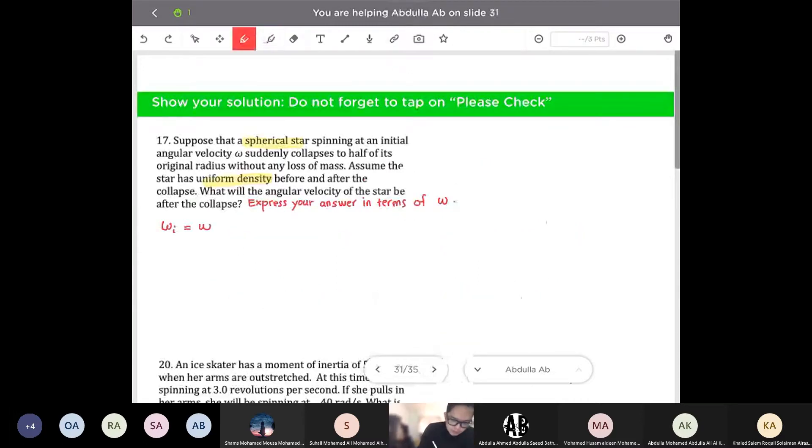So meaning to say the moment of inertia, the initial moment of inertia of the star is going to be equal to 2 over 5 m r squared. Now, it says there that the star suddenly collapses to half its original radius without the loss of mass. So having the same mass, the moment of inertia of the star would change because its radius changes.